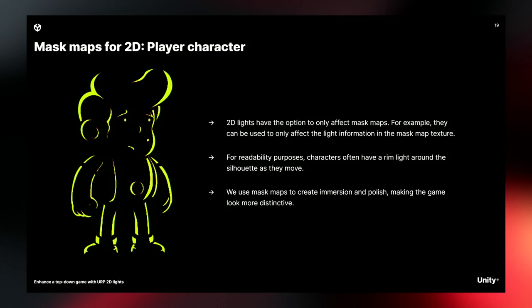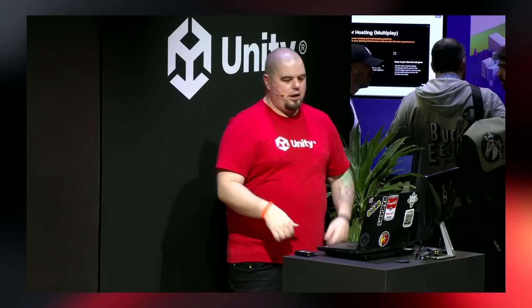Here's an example of our hero character with its mask map on. This is what's called hero lighting — using the mask map to help your character stand out in the game. You want your playable character to be visible at all times, and the mask map can help with that. Because it has this nice glow and reaction with the light, as players move around in the game world, they can at a glance tell where their character is. This is great for readability and that high-quality, professional look.